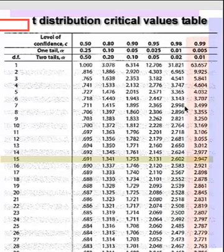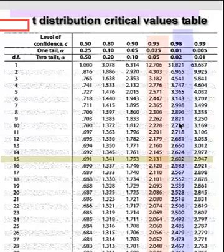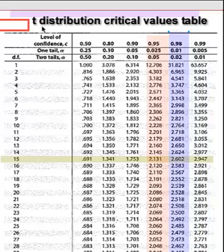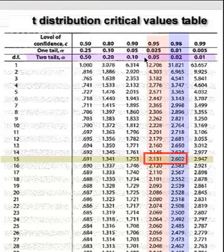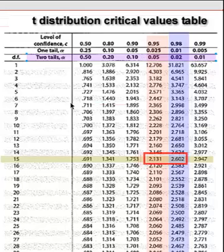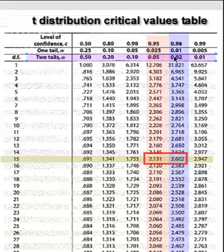And 2.22 falls between these two values. And we're dealing with a two-tailed test because it's not equal to. So therefore, the t-test statistic of 2.22 generates a probability between .05 and .02.